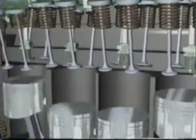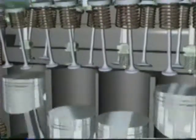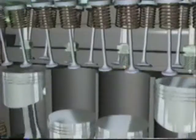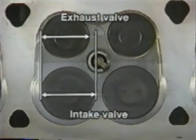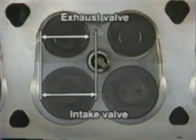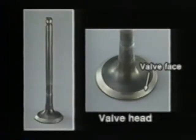Recent four-stroke gasoline engines use four valves for each cylinder, two intake valves and two exhaust valves. The intake valve is larger in diameter than the exhaust valve to ensure efficient intake. Since these valves are also subjected to high temperature and high pressure, they are made of heat-resistant nickel or special steel such as chromium steel.